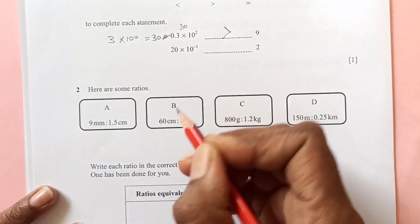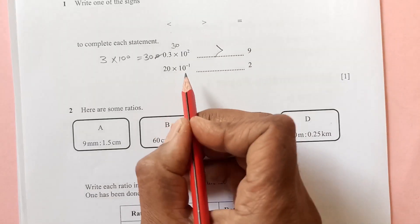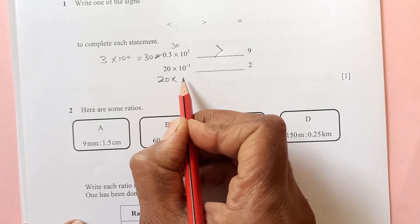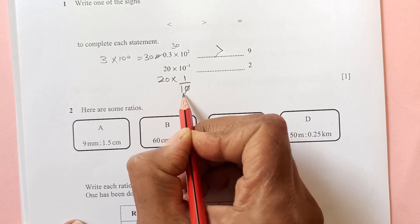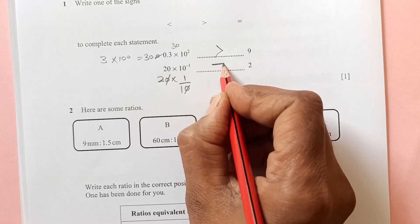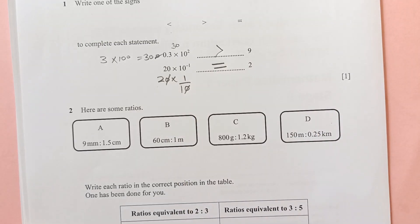So 30 is greater than 9. Now this one here, 20 times 10 power negative 1 is 1 over 10. This 0 and 0 is cancelled, so answer is 2. And here answer is 2 also, so 2 and 2 are equal.